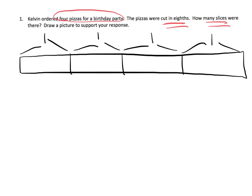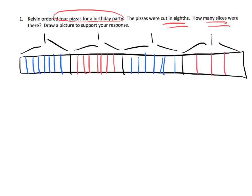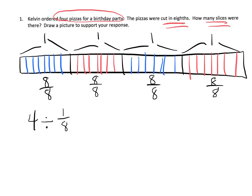It says each pizza was cut into eighths, so each pizza was cut into eighths. We've got eight eighths here, eight eighths here, eight eighths here, and eight eighths here. So we can see that four divided by one-eighth — because essentially we're taking four pizzas and cutting them into eighths — is the same thing as four times eight, which is 32.